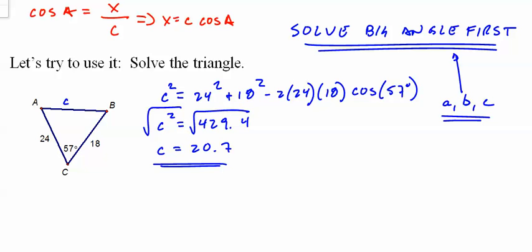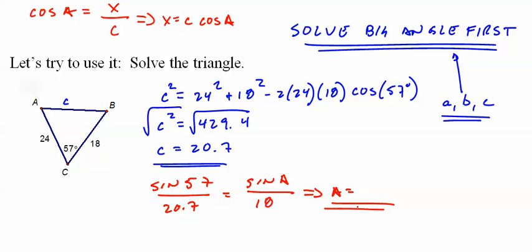So change colors, make it a little easier to see. Law of sines now. Sine of 57 over 20.7 equals, let's do A, sine of A over 18. A equals, I'm going to do it all at once, second sine 18 times sine of 57 close parentheses divided by 20.7. So angle, we round to the nearest degree, 47 degrees. Which seems about right. Across from 20.7 is 57, and so across from 18 should be smaller but not that much smaller, so it looks about right.